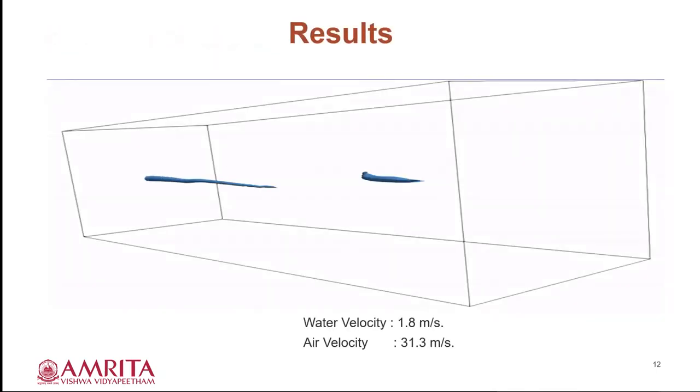Coming to the results. By using the Eulerian and VOF framework, we are able to predict the interface between the two fluids and the breakup length can be identified. The animation is shown for water and air velocities of 1.8 and 31.3 m/s respectively, where the breakup length can be visualized.